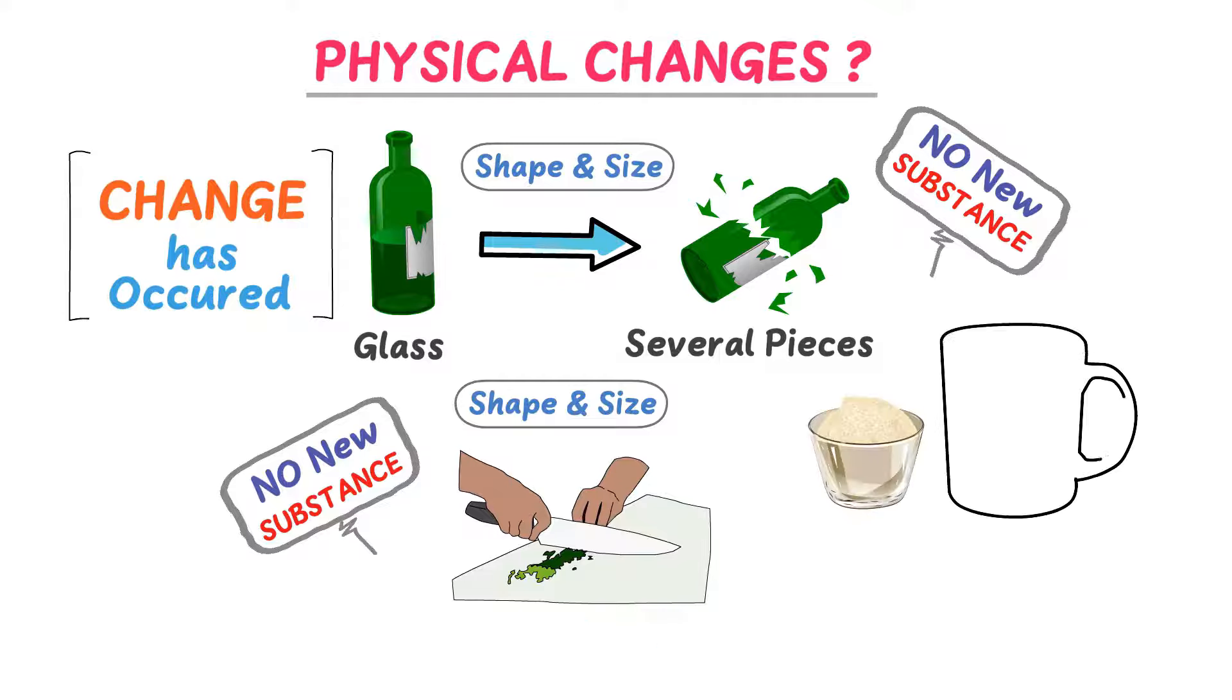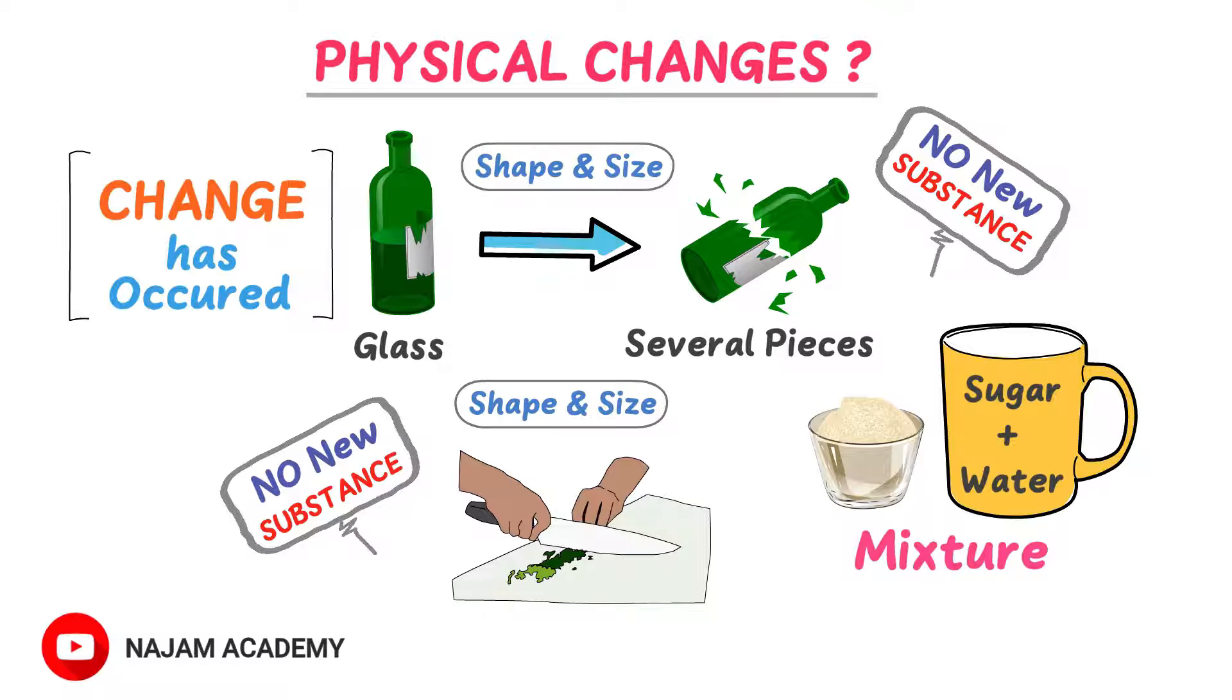Thirdly, adding sugar into water. When you add sugar into water, you get a mixture. The sugar crystals dissolve in the water, thereby changing their shape and size. But sugar crystals still retain their properties in the water like sweetness. Secondly, we do not get a new substance when we dissolve sugar in the water. Thus adding sugar in the water is an example of physical change.